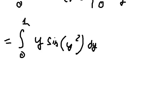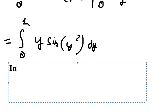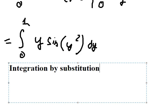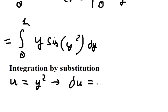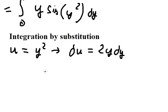Next, we need to use integration by substitution. Let u equal y squared. Taking the derivative of both sides, we get du equals 2y dy. But we don't have the factor of 2, so we divide both sides by 2.